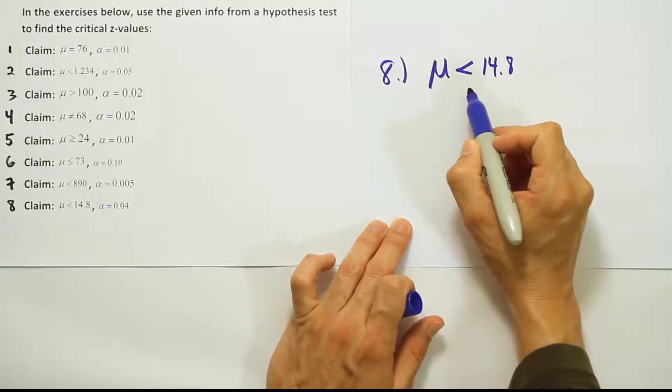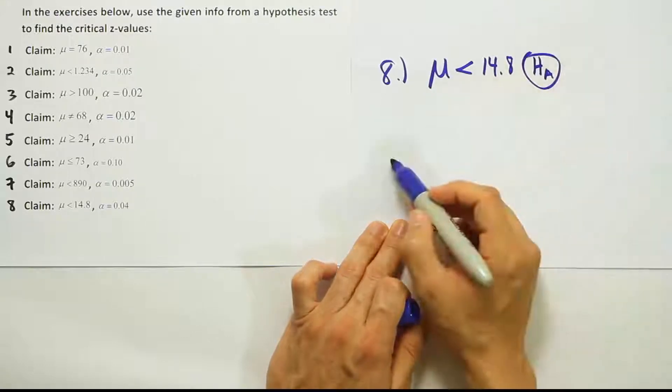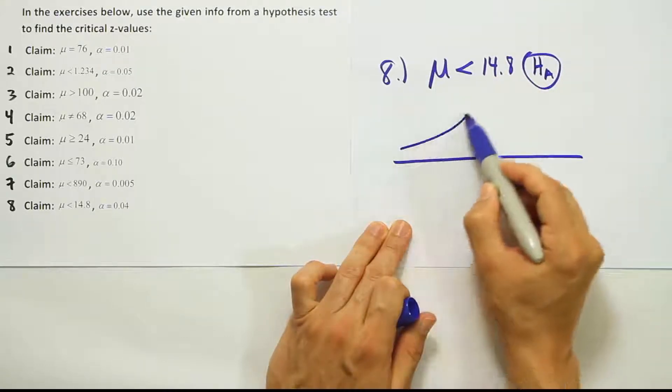Again, if we have a less than symbol, we know we're dealing with HA. That's one of the symbols that HA uses. And that also tells us that we have a left tailed test.